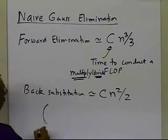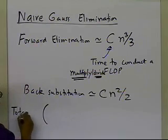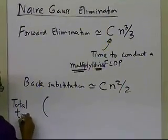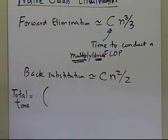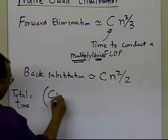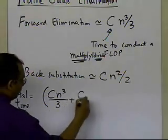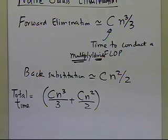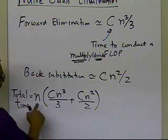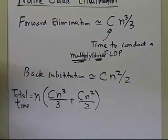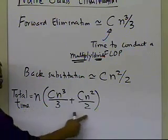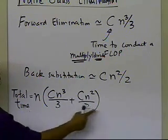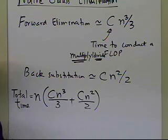The total time it is going to take to find the inverse of the A matrix will be cn³/3 plus cn²/2 for a single forward elimination and back substitution. Since I have to do this n times to find the inverse, I'll have n times that quantity: n times (cn³/3 plus cn²/2), because I have to do this forward elimination and back substitution n times.